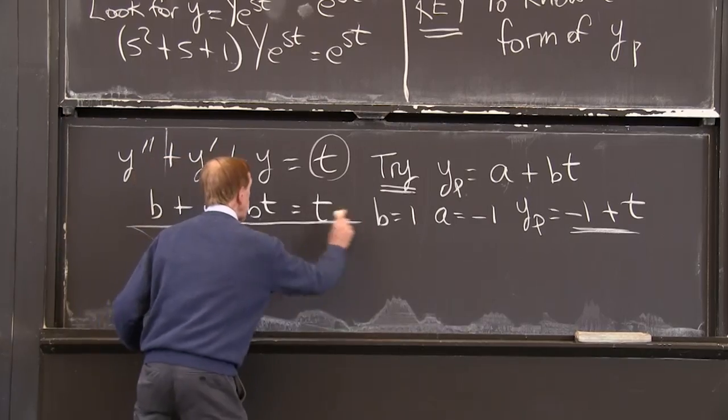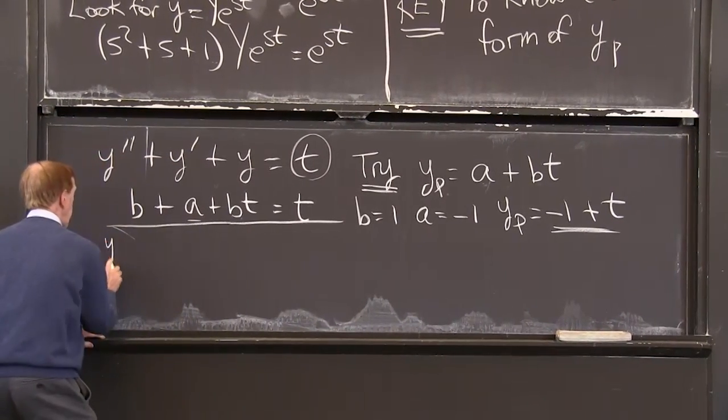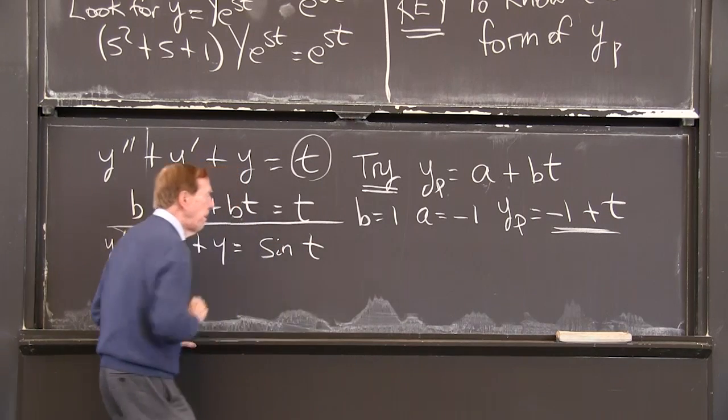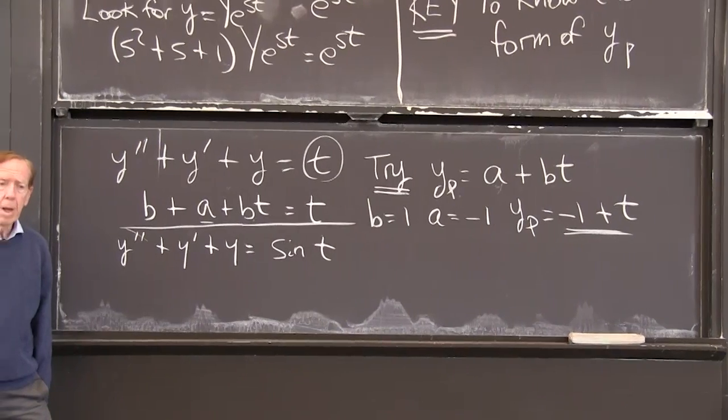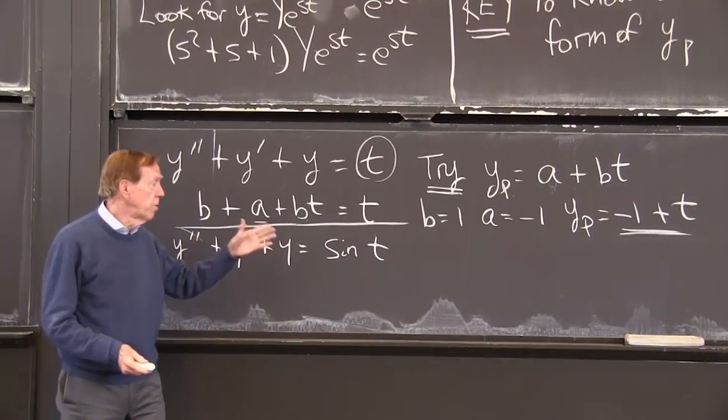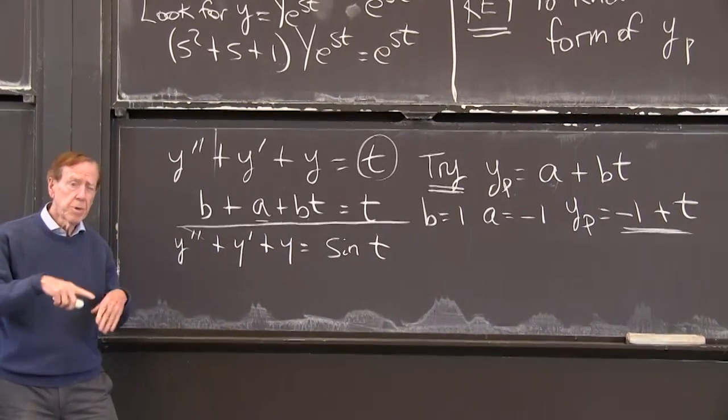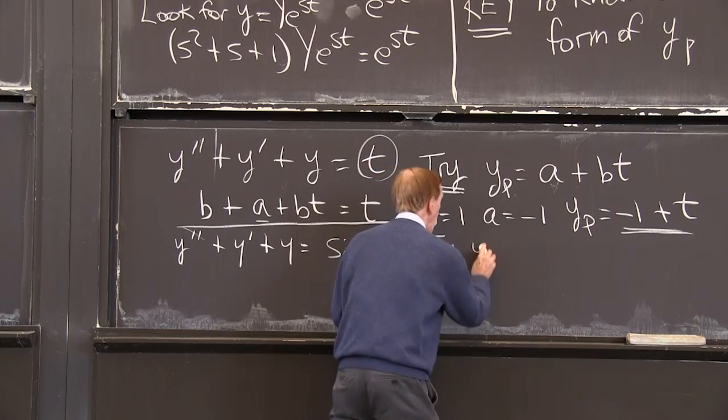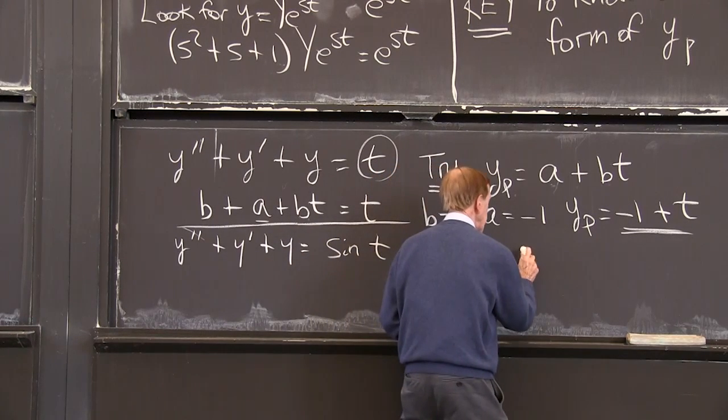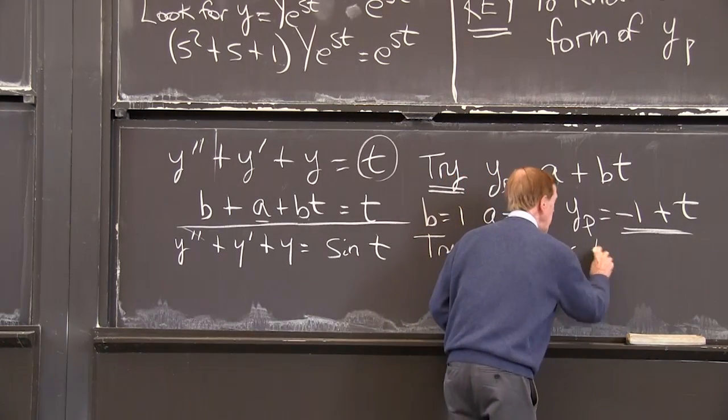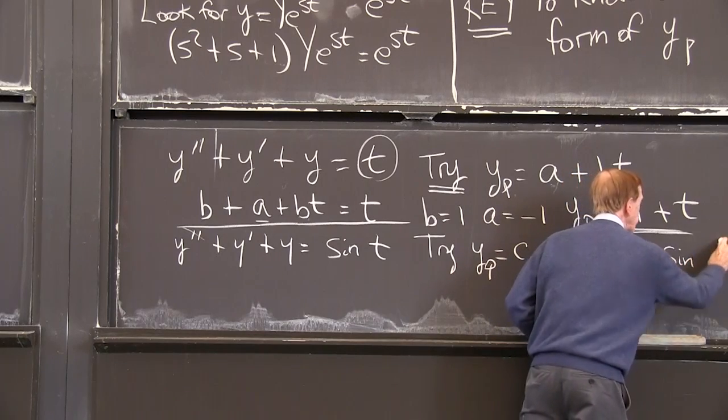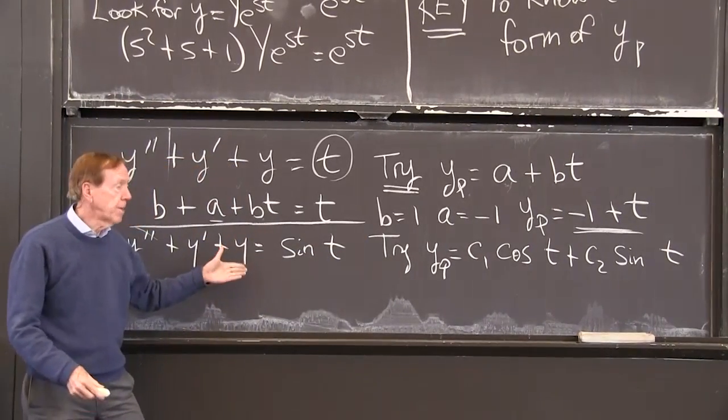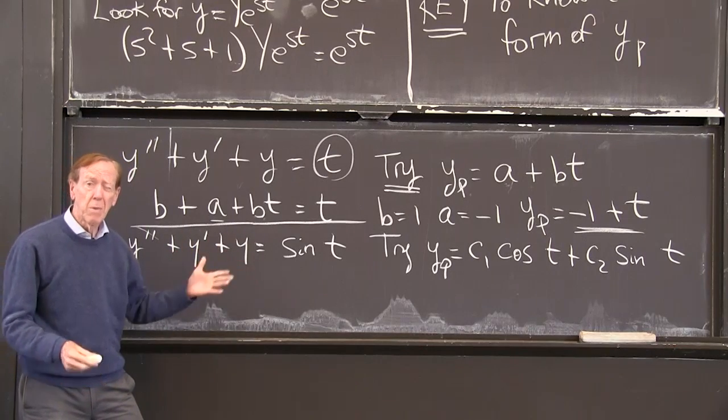Say sine t. So that case works. Now we want to try y double prime plus y prime plus y equals, say, sine t. What form do we assume for that? Well, I can tell you quickly. We have to assume a sine t in it, and we also need to assume a cosine t. The rule is that the things we try, so I'll try y particular is what we're always finding. Some c1 cos t and some c2 sine of t. That will do it. In fact, if I plug that in, I match the two sides, I determine c1 and c2, I'm golden.